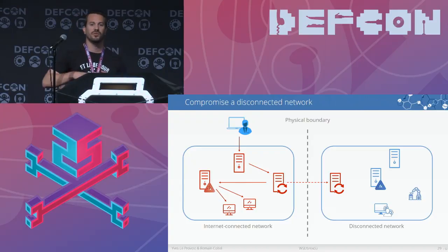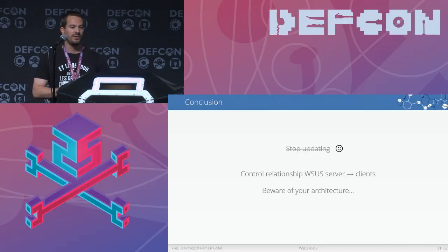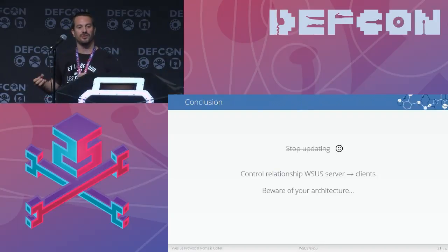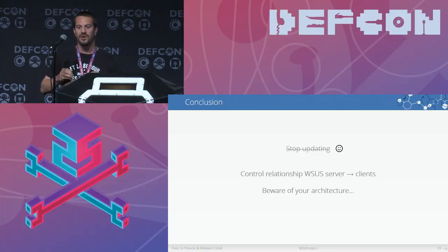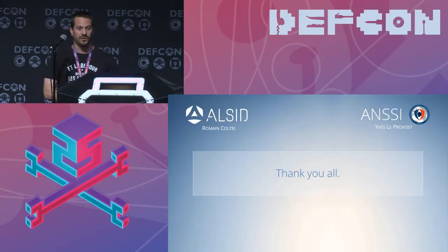In summary: we compromised the connected network, managed to transfer a malicious update to the disconnected network, and compromised the disconnected network. In conclusion, if you have WSUS servers in your network, there is a control relationship from those WSUS servers to all their clients. We need to be careful about the positioning of WSUS servers. When you design a new architecture, you have to treat the WSUS servers appropriately. Thanks for your attention.